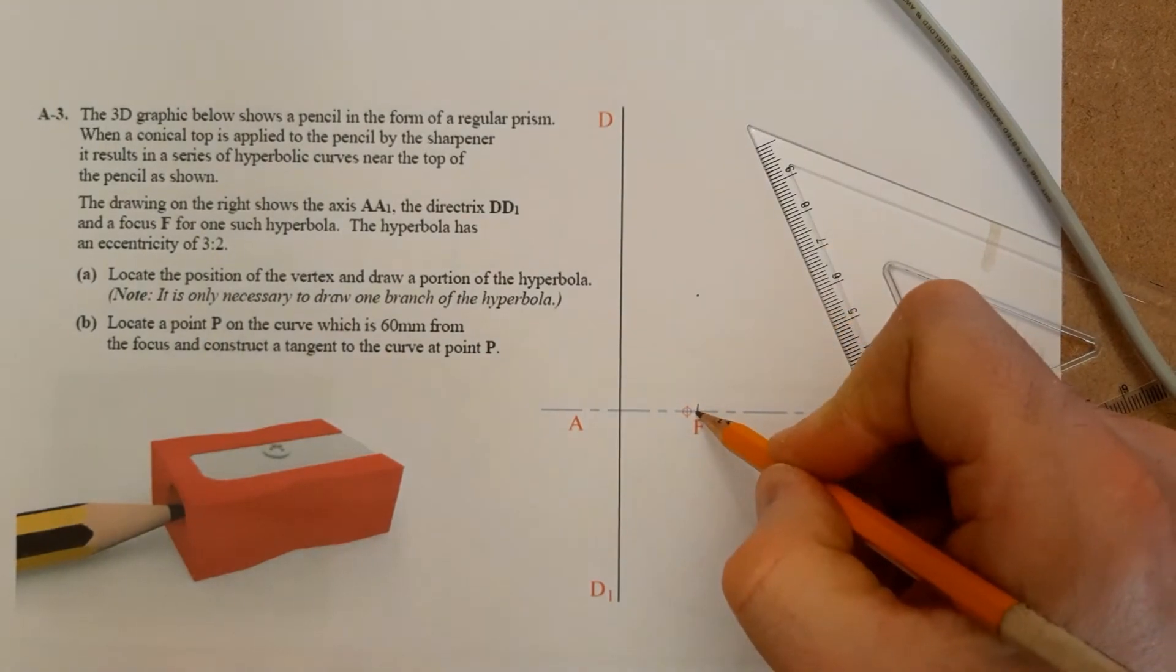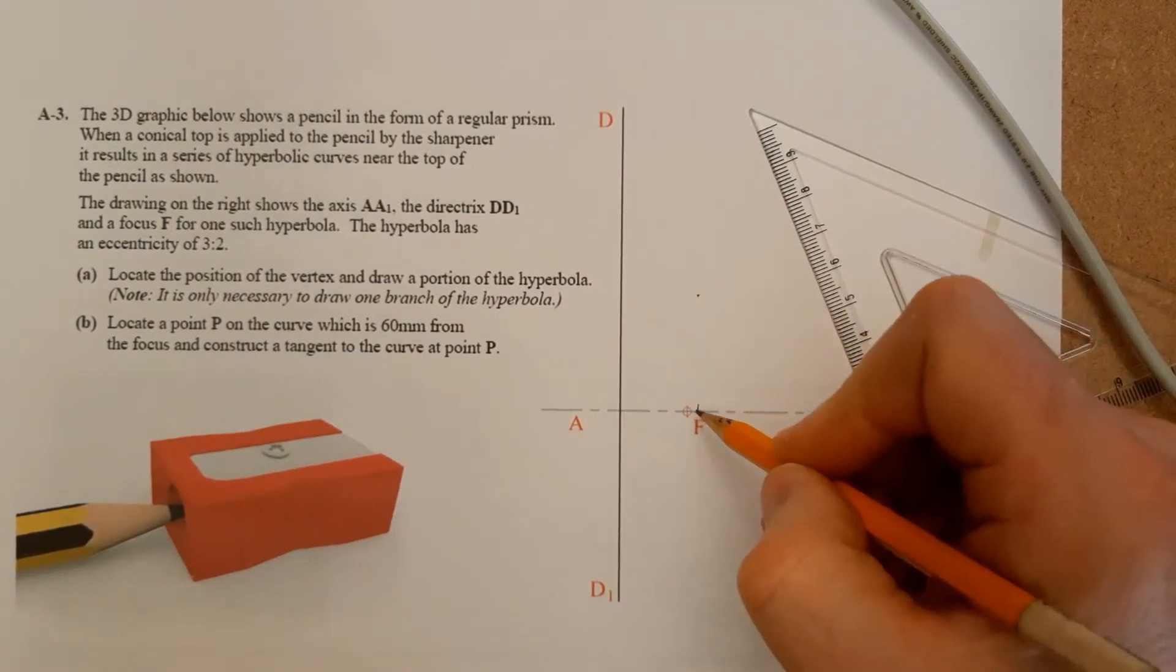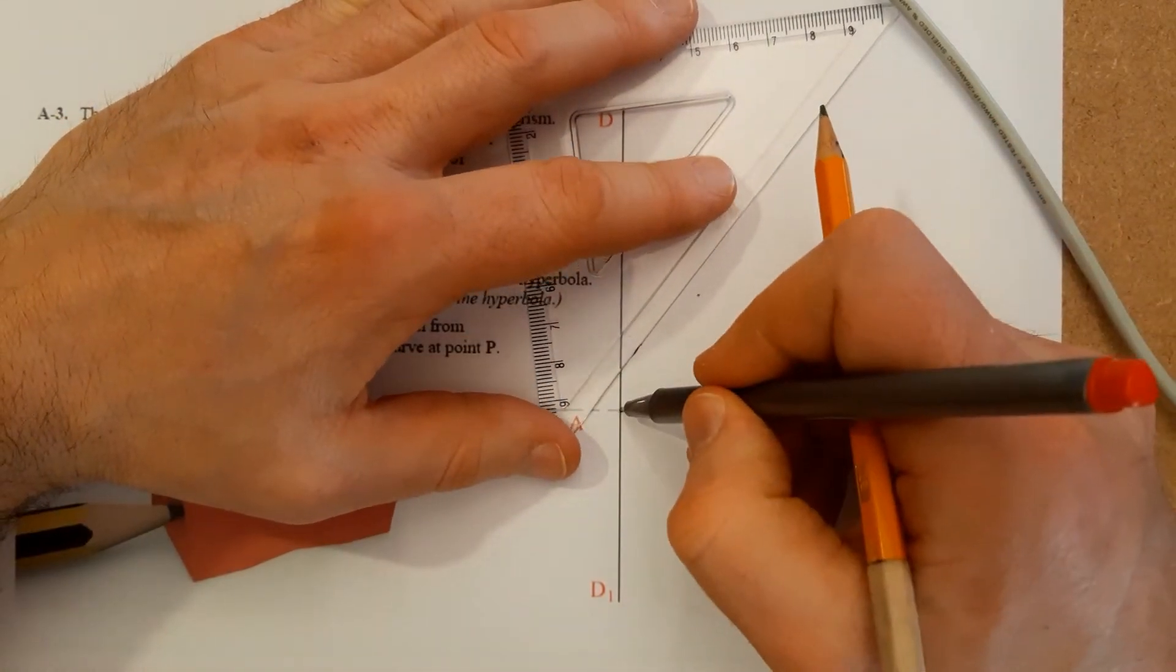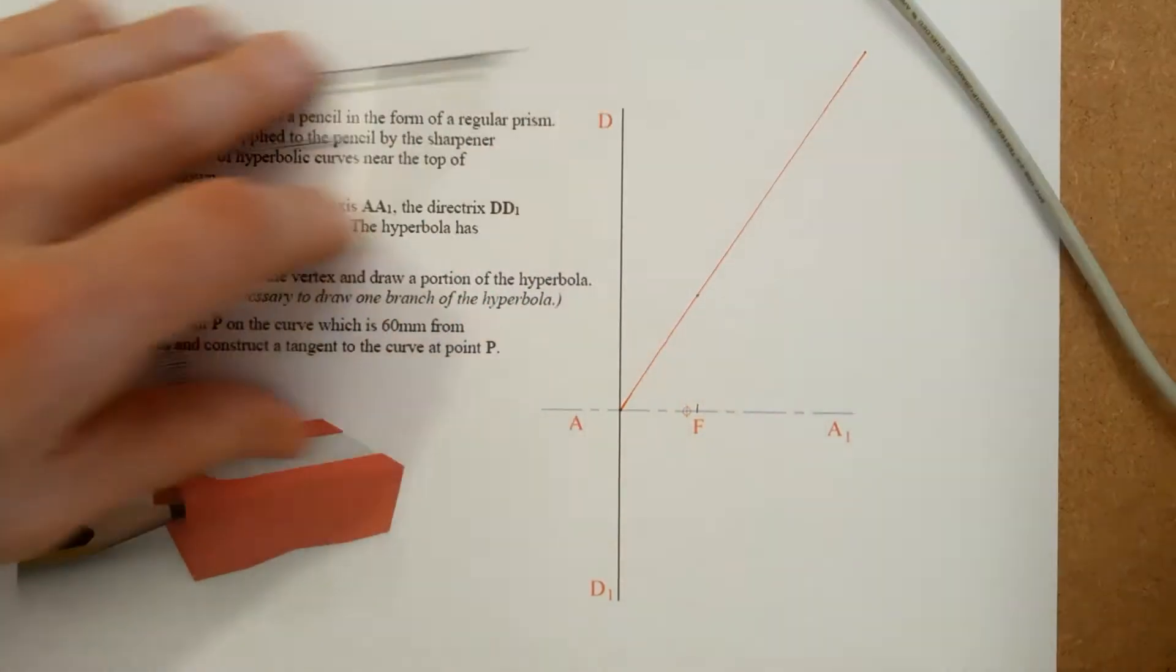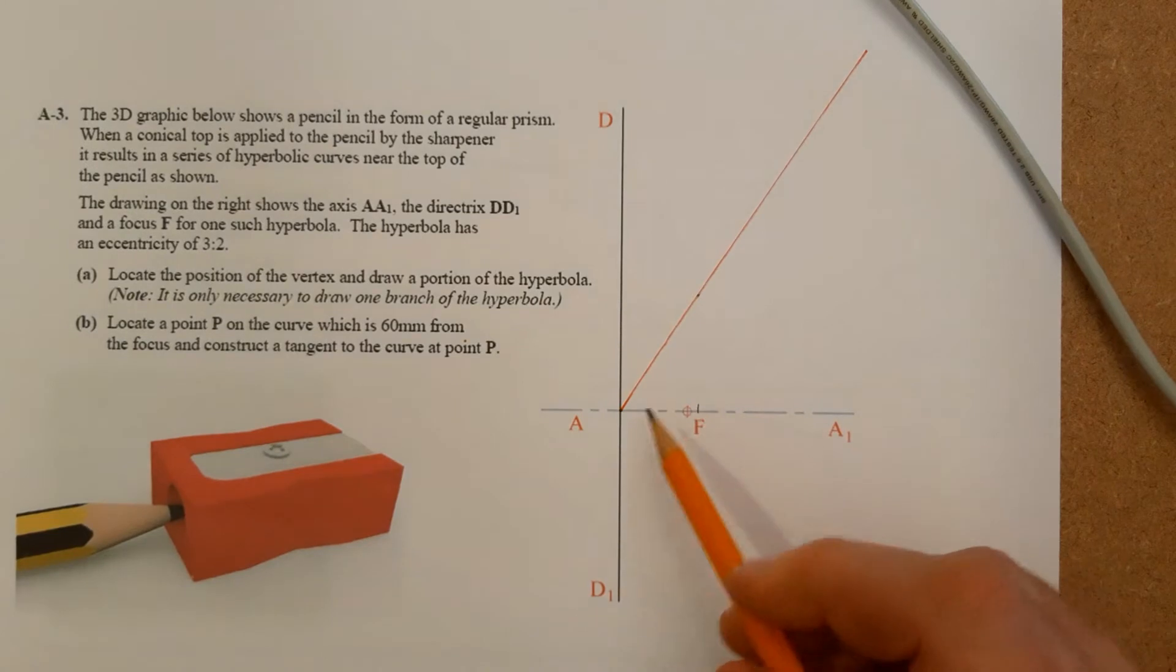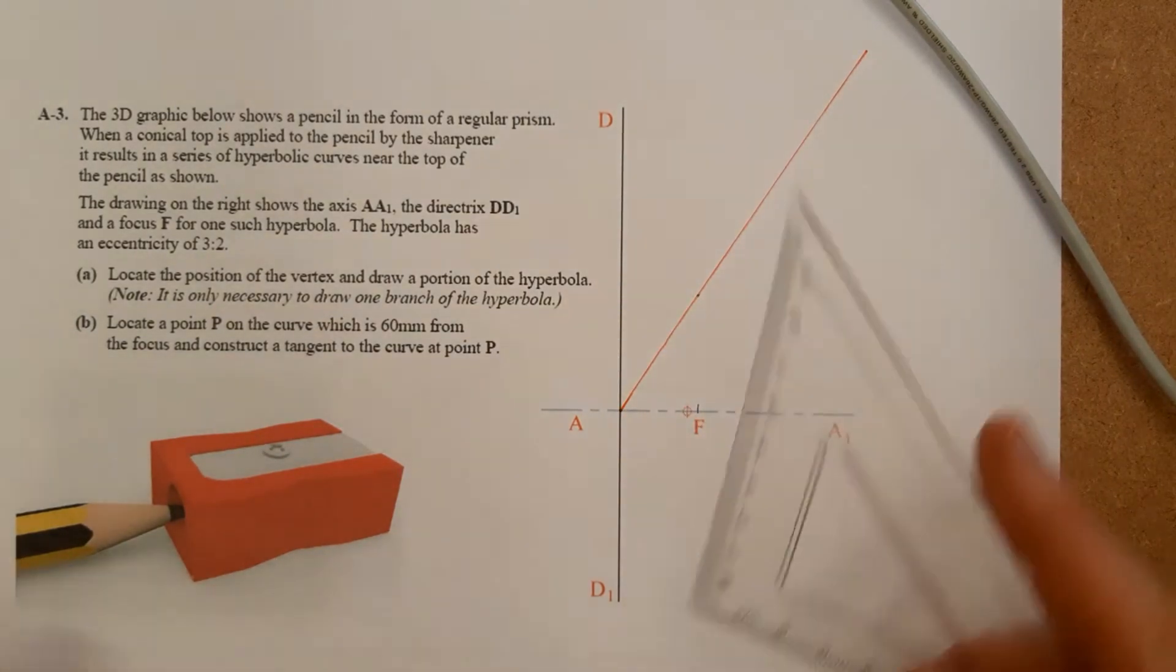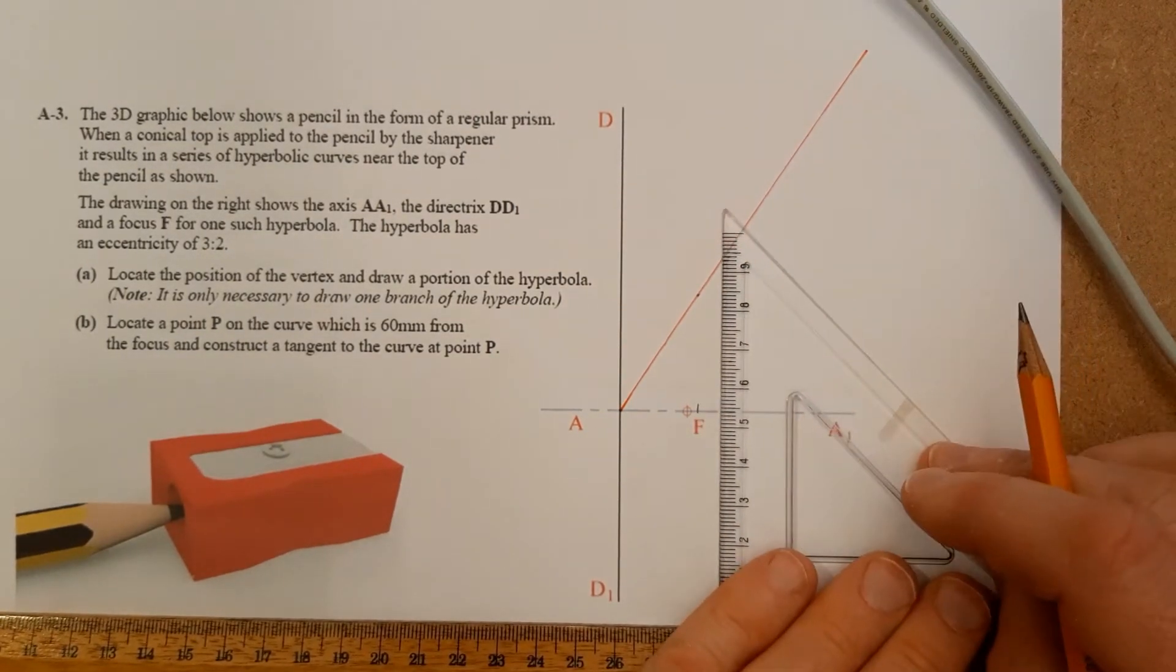We'll say two centimeters going up three, let's call them two units, three units. That is going to give me a point on the eccentricity line. Now that line, you can clearly see there, is steeper than 45 degrees and I know that's right. If you did it the other way, you would have a line that's less than 45 degrees and that would be wrong.